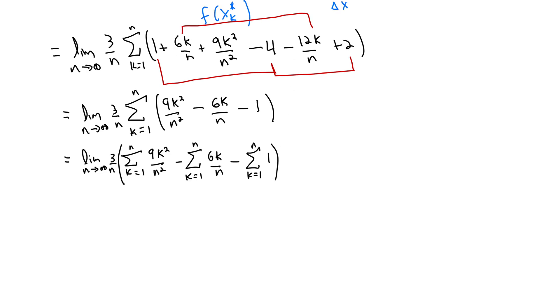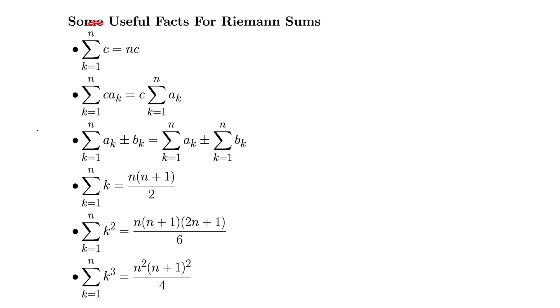Well now we can use a technique for each one of these sums. Going back to our useful facts, note that the sum of a constant is just n times that constant. So the sum of simply 1 is going to be n times 1, which is just n. We also have these two facts about k and k squared. So the sum of k can be written as n times n plus 1 all over 2, and k squared can be written as n times n plus 1 times 2n plus 1 all over 6. We'll also use this fact that a constant inside a sum comes out to the front of a sum.